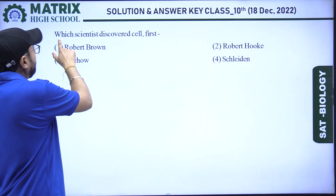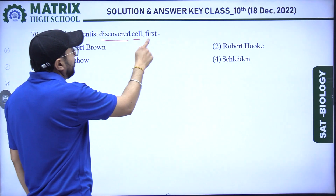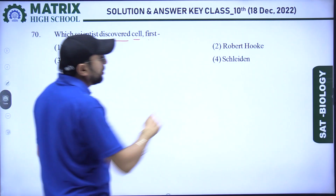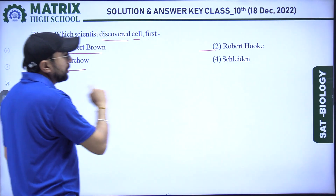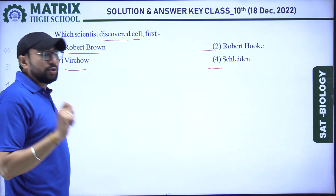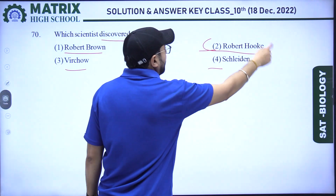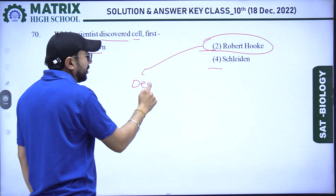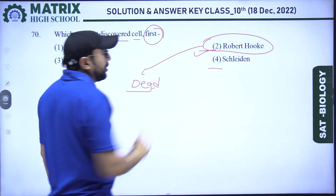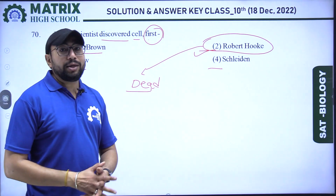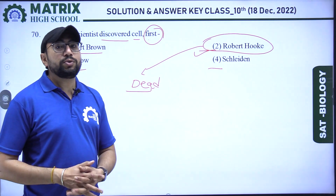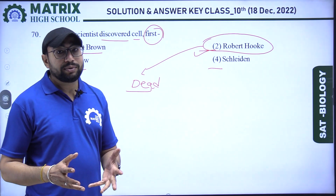Next question: which scientist discovered the cell first? Options: Robert Brown, Robert Hooke, Virchow, and Sheldon. Our right answer is Robert Hooke — he discovered a dead cell, but was the first to do so. Thank you. These are the solutions of the biology portion for the STSC exam 2022.